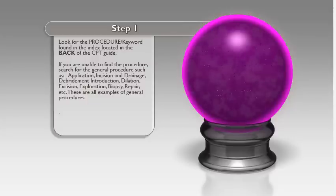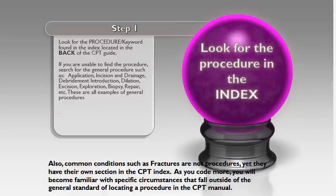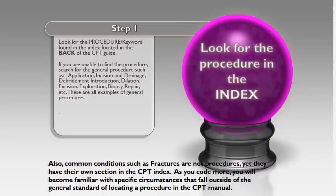Step 1: look for the procedure in the index. Also, common conditions such as fractures are not procedures, yet they have their own section in the CPT index. As you code more, you will become familiar with specific circumstances that fall outside the general standard of locating a procedure. Fracture is actually a diagnosis that happens to have a section in the index because there are so many fractures, and when you start coding you'll see that it makes sense to have a condition like fracture in a procedure section.